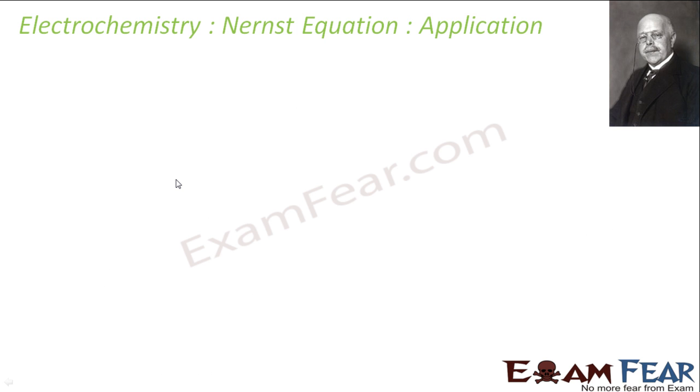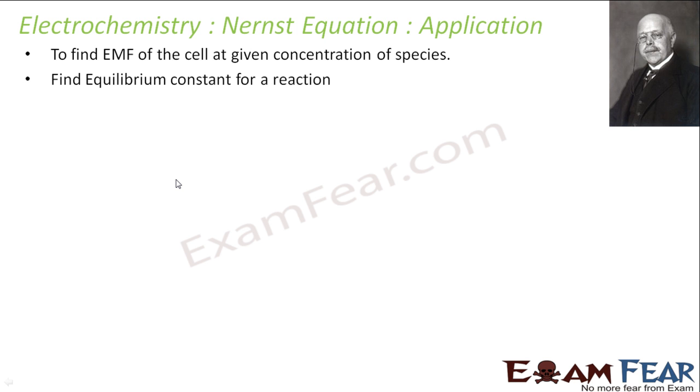Let's see some applications of Nernst equation. It is used to find EMF of the cell at any given concentration. The most important role: it is also used to find equilibrium constant. The Nernst equation has equilibrium constant: E = E° - RT/NF ln K. You can also use it to find the Gibbs energy of the reaction because you have K, you can find the Gibbs energy: -NFE.